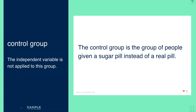The control group is the group of people given a sugar pill instead of a real pill. The sugar pill is sometimes called a placebo. So you would measure some kind of result between those two groups.